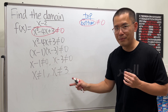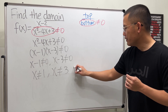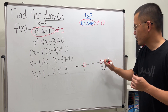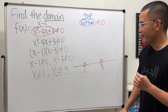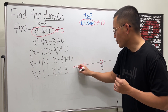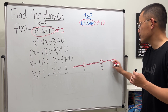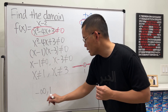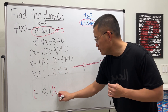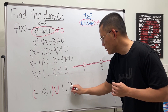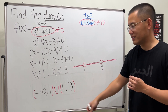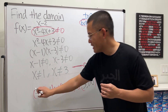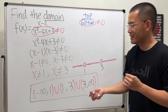This time we have two bad numbers we cannot use. On the number line, place open circles at 1 and 3. Everything else is okay, so we have three pieces. The domain is negative infinity to 1 (parentheses, parentheses), union 1 to 3 (parentheses, parentheses), union 3 to infinity (parentheses, parentheses). There you have it.